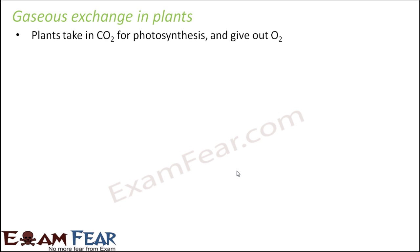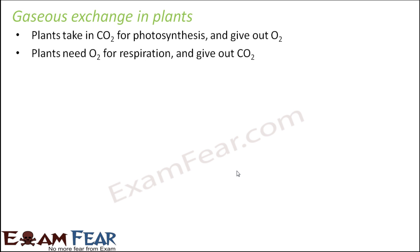So in plants also gaseous exchange takes place. Now how does this exchange take place? In animals we have organs like lungs, but in plants we don't have that. So how is the gaseous exchange facilitated in plants? Plants take in carbon dioxide for photosynthesis and give out oxygen. When we talk about the process of respiration, it is just the opposite — in respiration, carbon dioxide is released as an output, whereas oxygen is an input. However, oxygen is not a mandatory input for respiration.